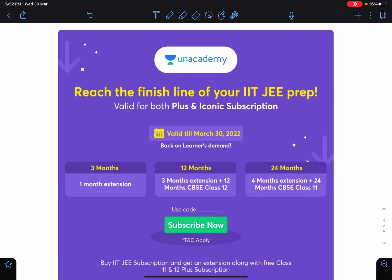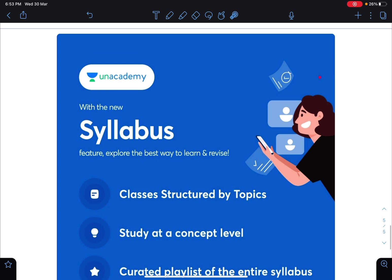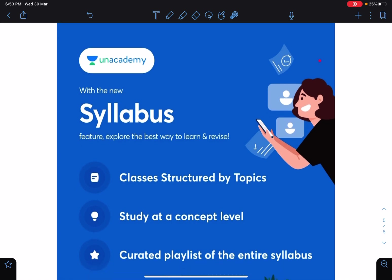This is the last day of the offer: 3-month subscription you will be getting 1 month extension, for 12 months you will be getting 3 months extension and 12 months CBSE, and for 24 months you will be getting 4 months extension and 24 months CBSE of class 11th subscription free. You can use my code NITANSAR in order to connect with me on Unacademy. This is a new feature on Unacademy website where in the syllabus section you can see the curated playlist of all concepts and topics.